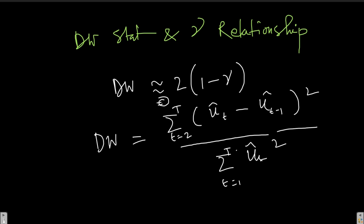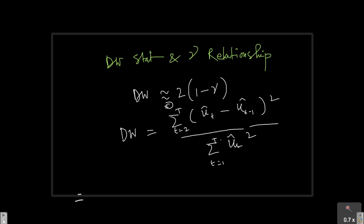Now, let us just expand the term on the numerator. We can definitely do that. It will be t is equal to 2 to t, we have ut hat square minus 2 into ut hat, right? ut minus 1 hat plus ut minus 1 hat square.